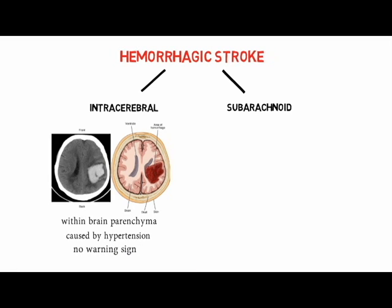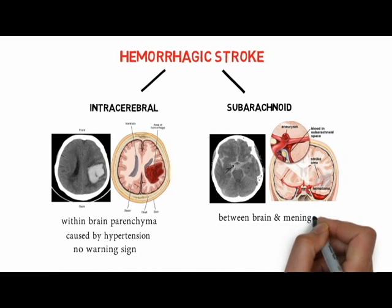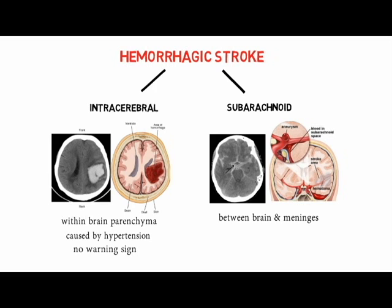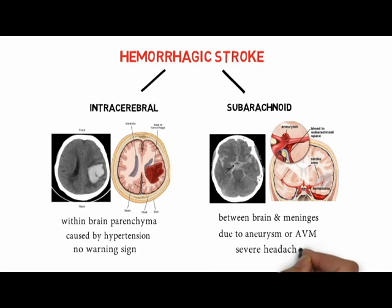Bleeding in intracerebral hemorrhage can be severe enough to cause coma or death. In subarachnoid hemorrhage, bleeding occurs between the brain and meninges — the membrane that covers the brain — in the subarachnoid space. This type of hemorrhage is often due to an aneurysm or arteriovenous malformation (AVM), and it often presents with severe headache, nausea, and vomiting.